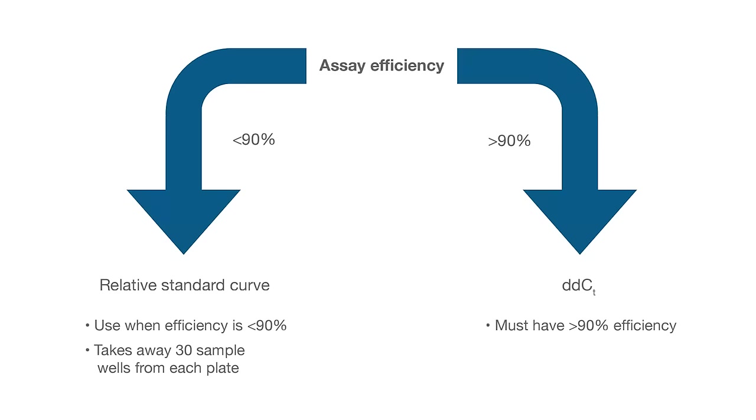The last step in ensuring that your primer set is going to yield usable, reproducible data is to ensure the PCR efficiency is within 90 to 110%. You can do this by simply running a standard curve with at least five logs of input DNA and using the software on your instrument to calculate the PCR efficiency. If this seems too complicated, you can use pre-designed TaqMan assays instead, which removes the primer design variable and ensures the best possible primer set.